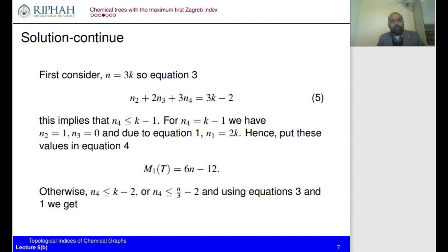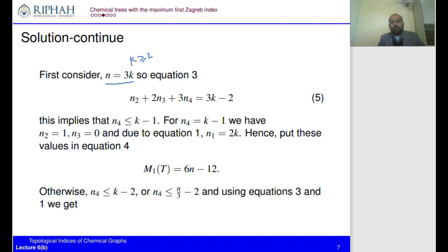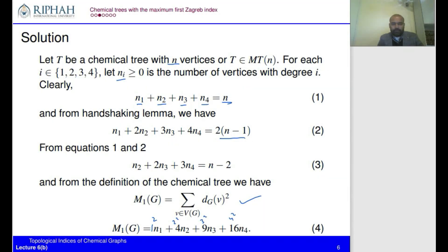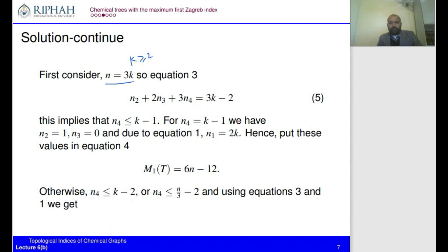We now move to the second part, discussing cases for this problem. Authors investigated that there are three cases; here we discuss only the case when n = 3k, meaning the number of vertices is a multiple of three. We consider k ≥ 2. Replacing n by 3k in Equation 3, we obtain Equation 5.